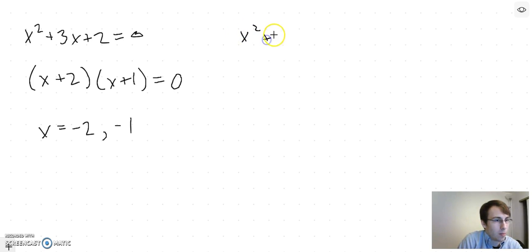x squared plus 3x minus 2 equals 0. Do you know of any factors of negative 2 that add to 3? I don't. So we've got to figure out another way to solve this. It turns out people have solved this problem a while ago and there's an equation that we can just plug our numbers into.